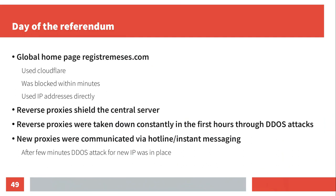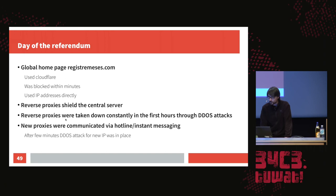The page announced that morning had a domain registered using Cloudflare, like the other pages, and it was blocked within minutes. It wasn't even possible to open the polling stations on time at 9 o'clock because when they tried to connect and register all the polling places, it didn't work. From that point on, only IP addresses were used directly — these were reverse proxies for a central server somewhere on the internet. In the first hours, these reverse proxies were hit with DDoS attacks constantly and went down quickly.